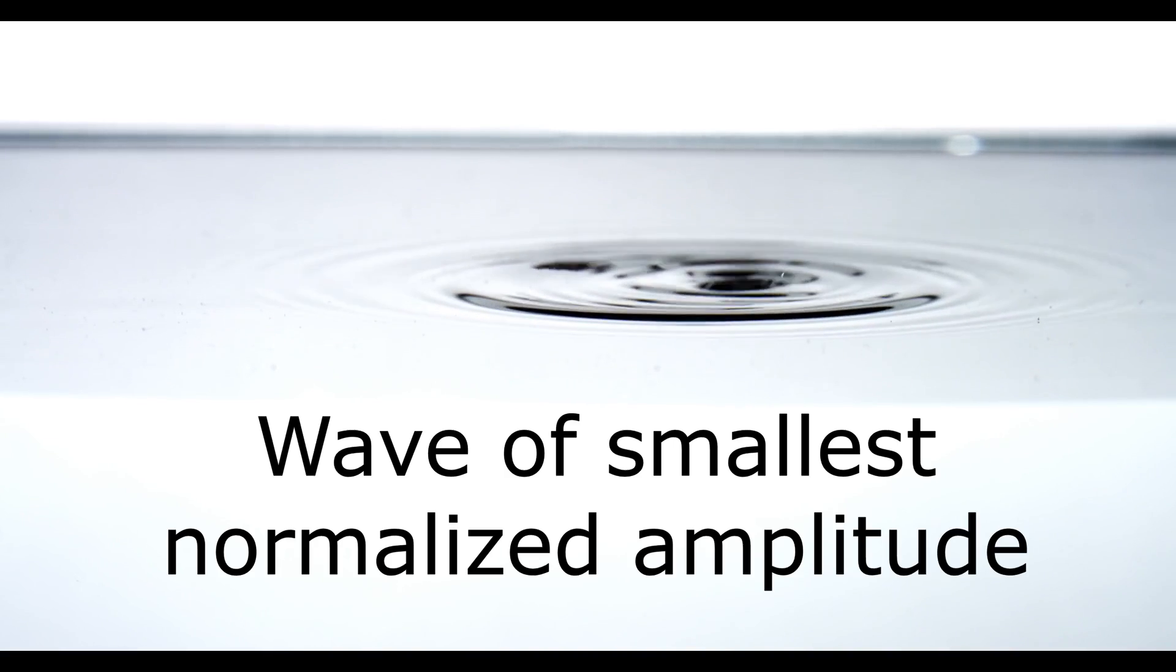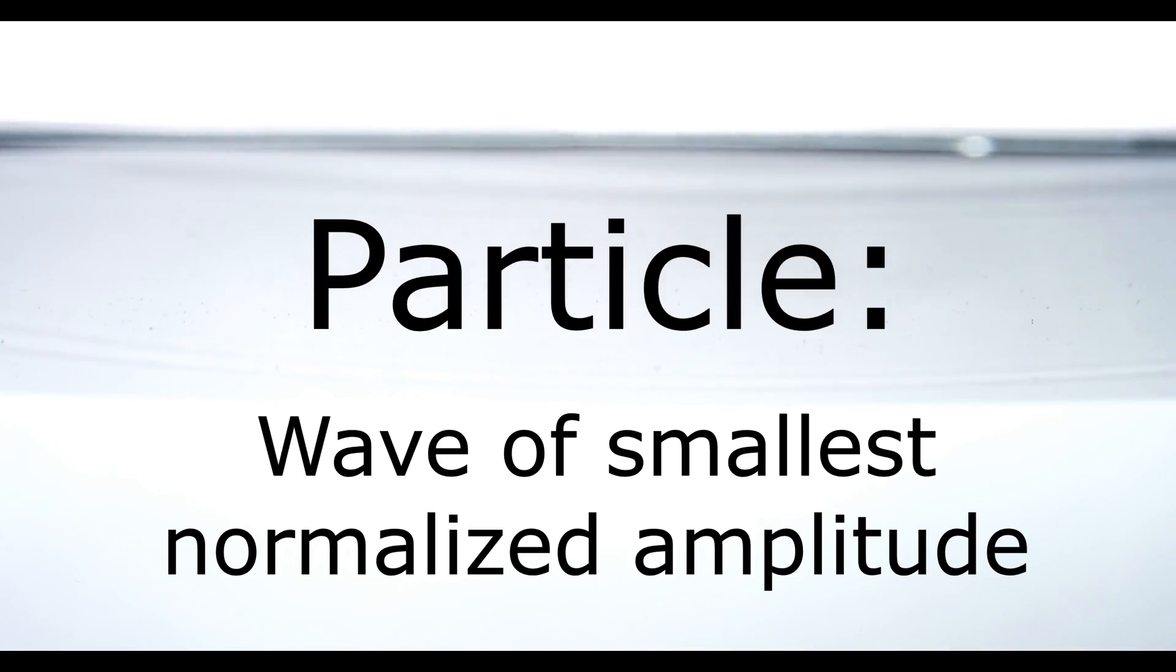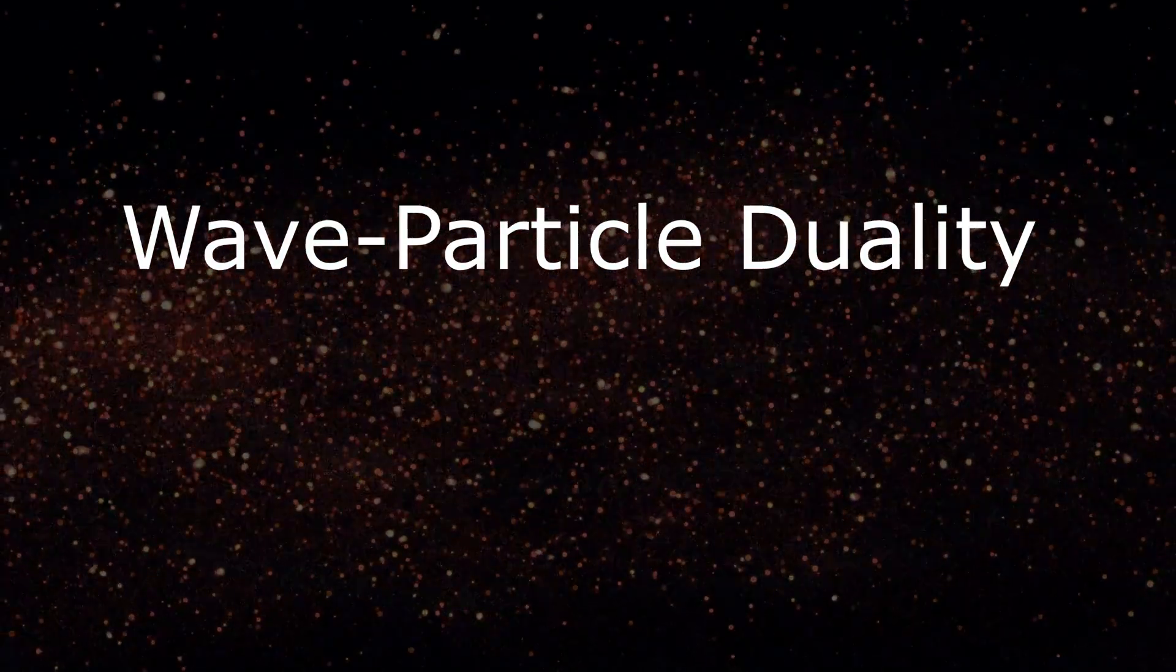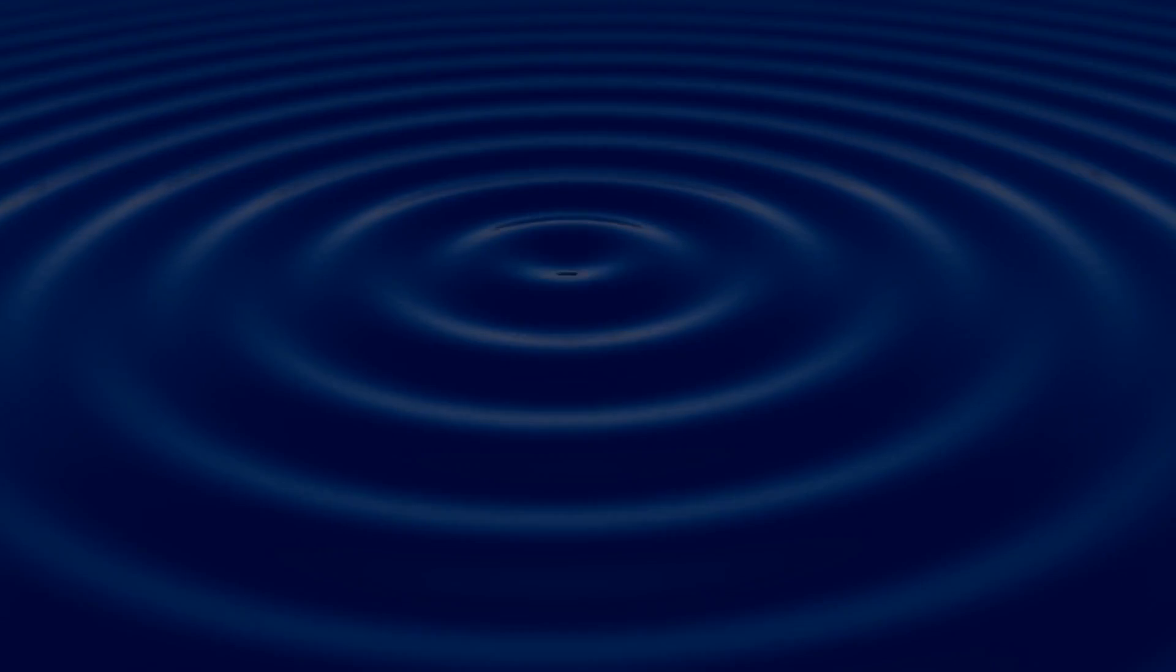This wave of smallest normalized amplitude is what we call a particle. You may think, that's weird, I thought particles were little dots bouncing around. And indeed, this is how we model them for larger scale systems. But what we're seeing here is called wave-particle duality. Fundamentally, particles are waves. But they're not normal waves, they're quantum waves, waves of the smallest possible normalized amplitude.